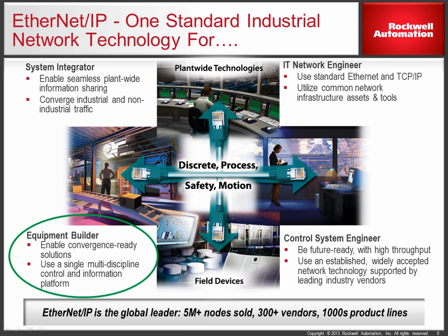EtherNet/IP supports multiple IEEE standards — 802.3 and 802.1 for standard Ethernet, as well as IEEE 1588 Precision Time Protocol for time synchronization. It uses standard IP from the IETF, the Common Industrial Protocol from the ODVA, and EtherNet/IP is also an IEC 61158 standard. Because it is standard — not merely standards-based — it is IT-friendly, future-ready, and sustainable. It is a multidisciplinary control and information platform.